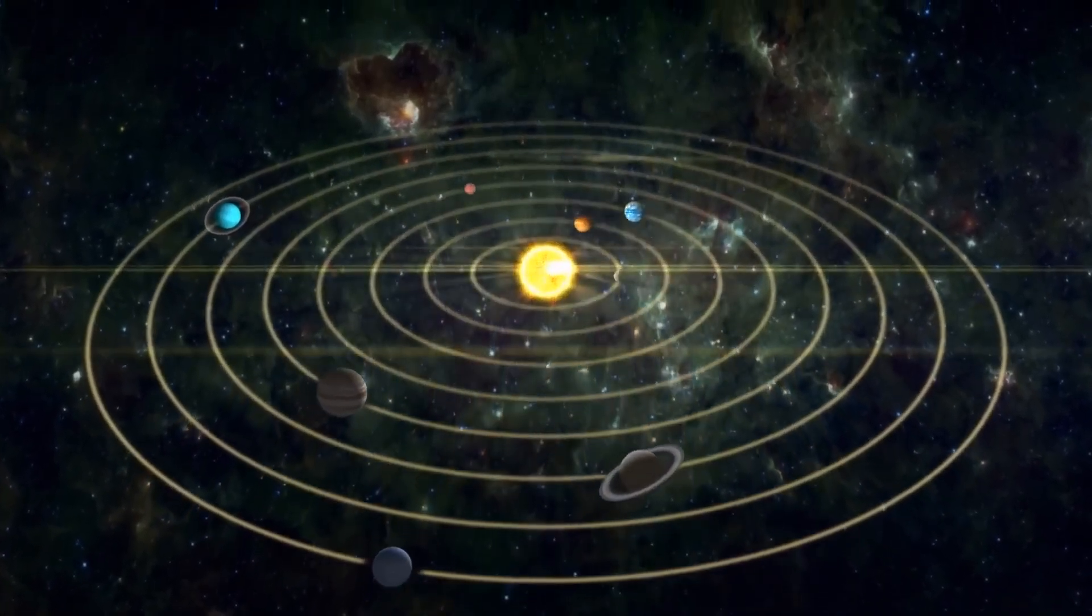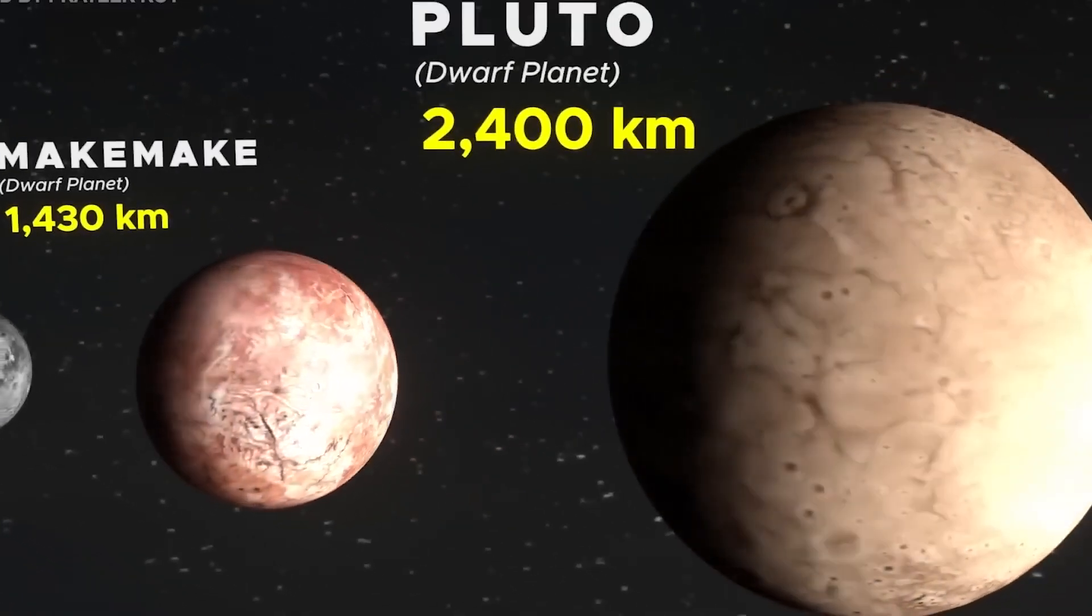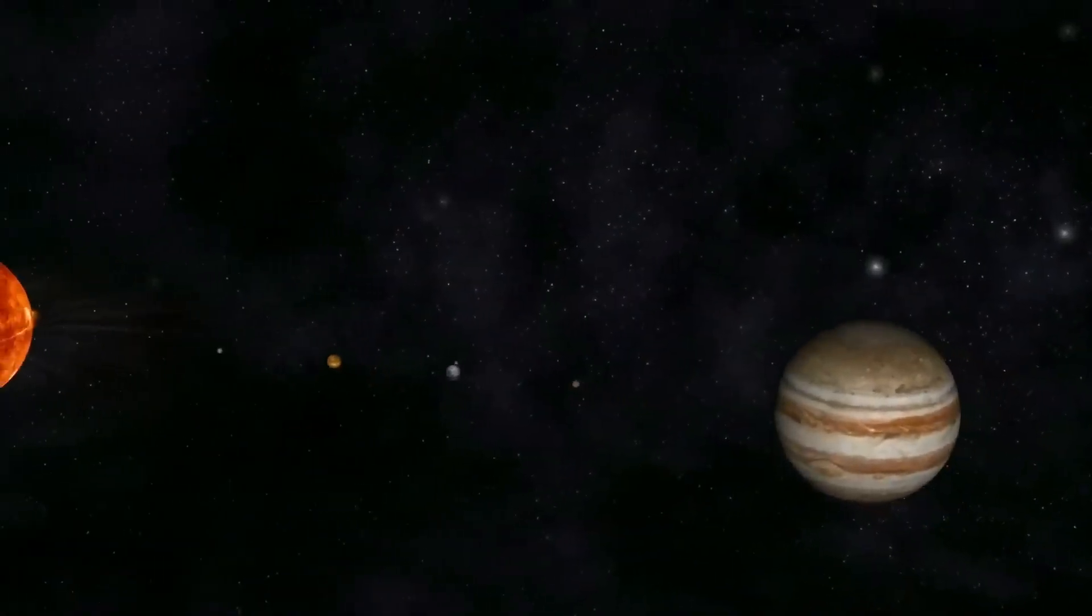Neptune, the farthest known planet in our solar system, sits at an average distance of about 4.5 billion kilometers from the sun.